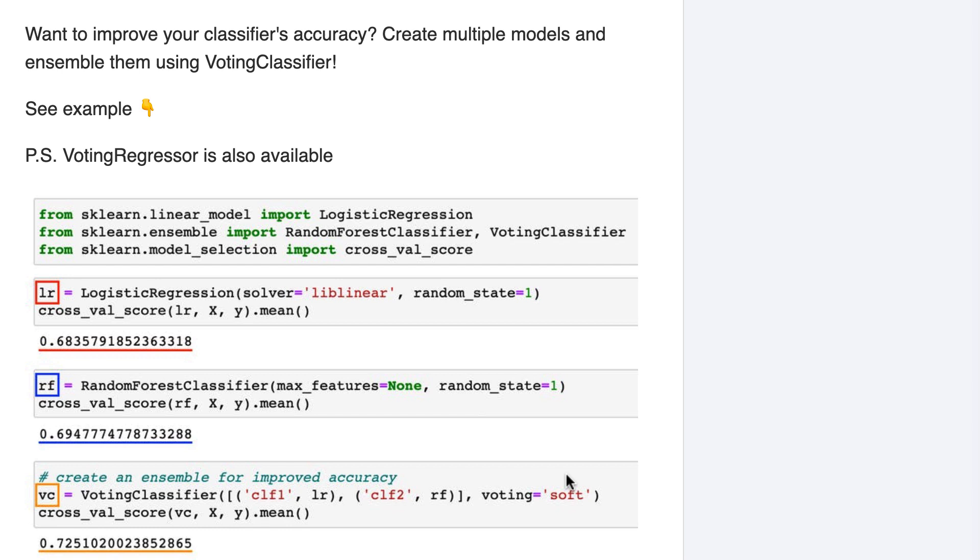However, soft voting requires that your models have a predict-proba method, which not all models do, whereas hard voting will always work.